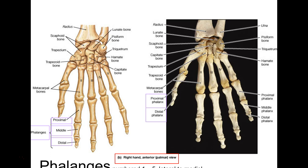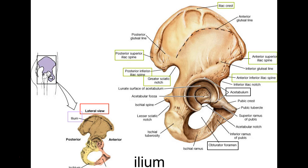We just finished the hand; let's go on down to the pelvic girdle. This is one fused bone — the ileum, ischium, and pubic bone. These three bones fuse and become one complete bone called the coxal bone, spelled C-O-X-A-L. Don't confuse that with the little tailbone, the coccyx, spelled C-O-C-C-Y-X.